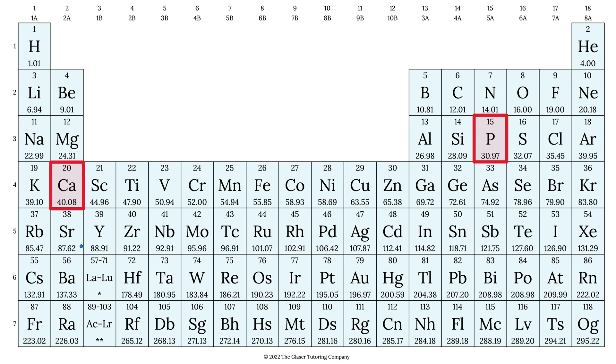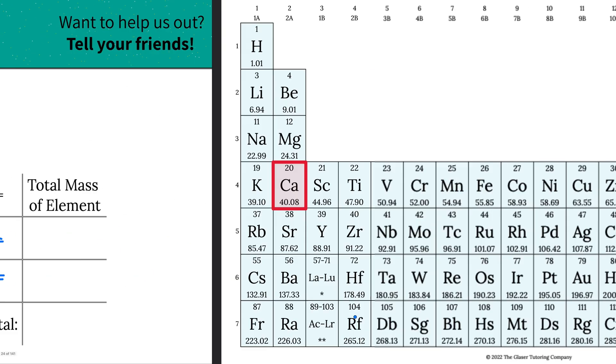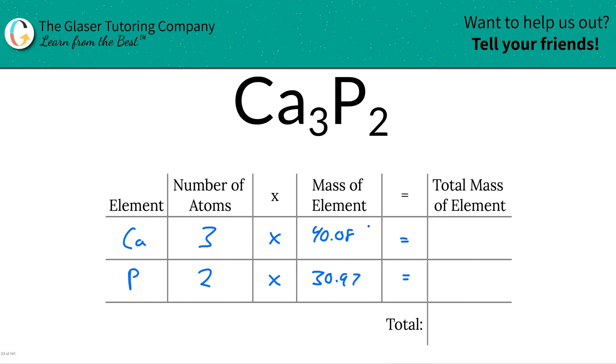So let's write that down. So here for calcium, we got 40.08 and here we have 30.97 for phosphorus. Then all we're simply going to do is, was it 0.97? Yeah, 0.97. Just had to double check.